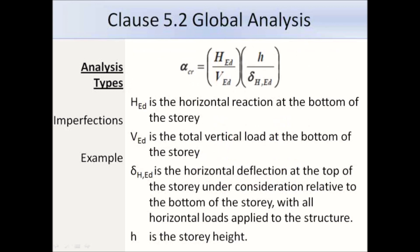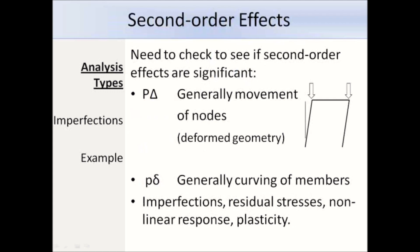Here is a list showing the definitions of the terms used in that expression. H_Ed is the horizontal reaction at the bottom of the storey. V_Ed is the total vertical load at the bottom of the storey. Delta_El is the horizontal deflection at the top of the storey under consideration relative to the bottom of the storey with all horizontal loads applied to the structure. H is the storey height. We need to check for second order effects: P-large-delta effects are related to deformed geometry, the movement of nodes, meaning the loads applied will not be where they were modelled. Due to horizontal loads or imperfections, vertical loads will be eccentric and will cause further deformations. P-small-delta effects are related to the curving of members which increases bending, but in the UK we account for P-small-delta effects in the member checks.